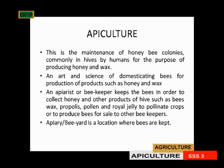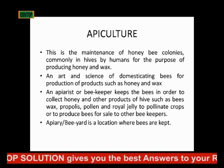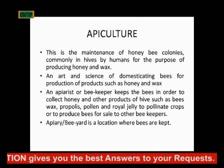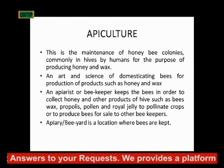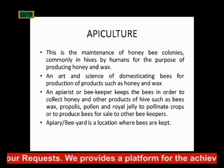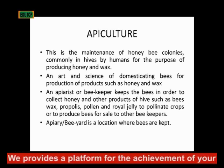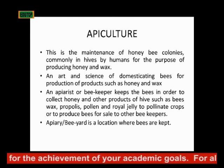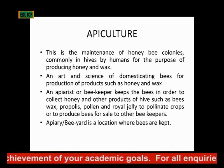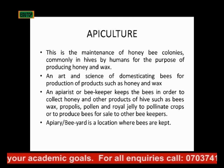An apiarist, or beekeeper, is the one that keeps bees in order to collect honey and other products such as bee wax, propolis, pollen, royal jelly — to pollinate crops or to produce bees for sale and other bee products. The person that keeps bees is called an apiarist. The yard where bees are kept is called an apiary — it is a location where bees are kept.